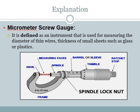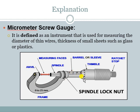Here are the parts of the Screw Gauge: a spindle, anvil, and all these other parts. What we need to focus on is the main scale or index line of the Screw Gauge, and the circular scale of the Micrometer or Screw Gauge.